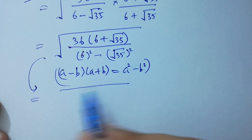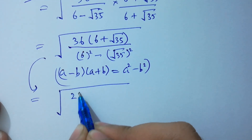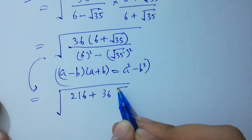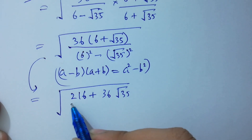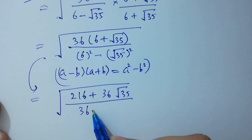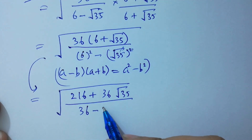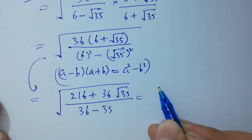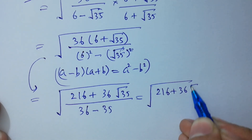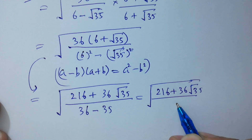The numerator: square root of 36 times 6 is 216, plus 36 times square root of 35. The denominator: 6 times 6 is 36, minus 35 — the square and square root cancel — leaving 1. So we have 216 plus 36 square root of 35 over 1.